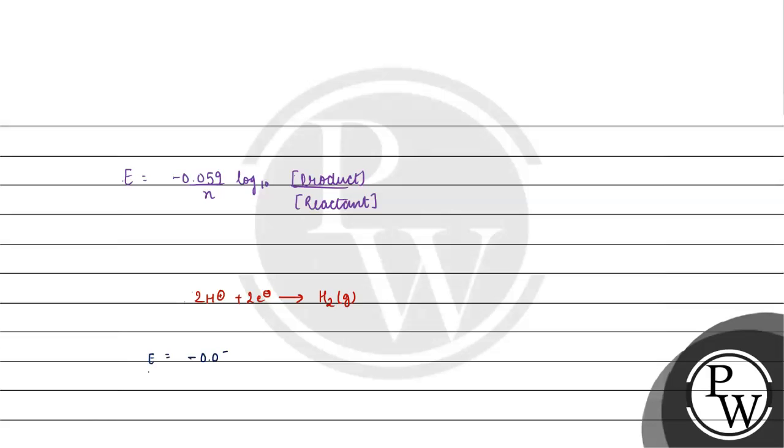E equals minus 0.059 by 2 log base 10. In the product, pressure of hydrogen gas at 25 degrees Celsius, we have 1. And then, let's talk about reactant's concentration, which is concentration of H plus squared.